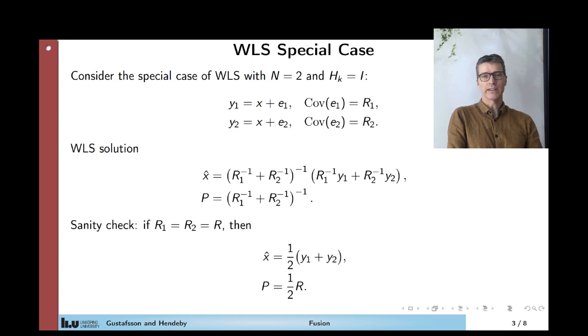So if you plug in this problem formulation into the general weighted least squares solution, we get an x hat which is a weighted combination of y1 and y2, where the weight is R1 inverse and R2 inverse respectively. And then we have to normalize so the expected value is equal to x. And this normalization matrix is also the covariance of the estimator.